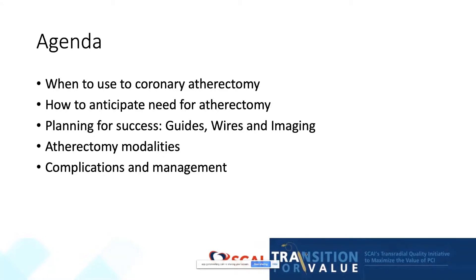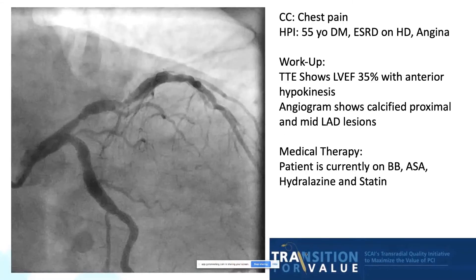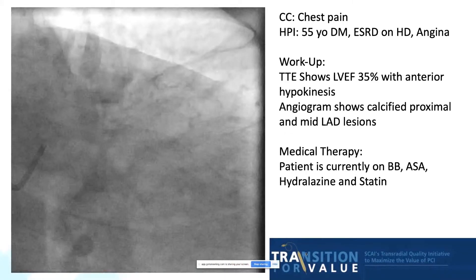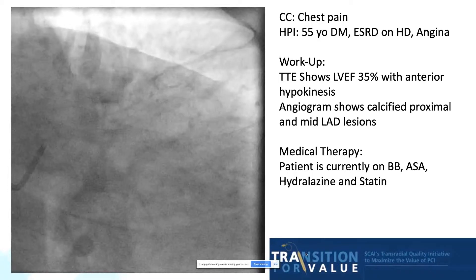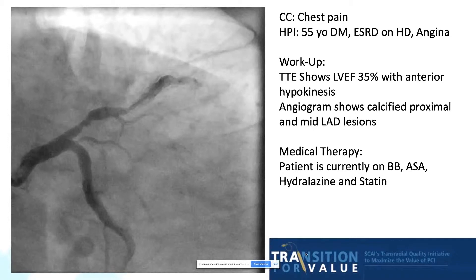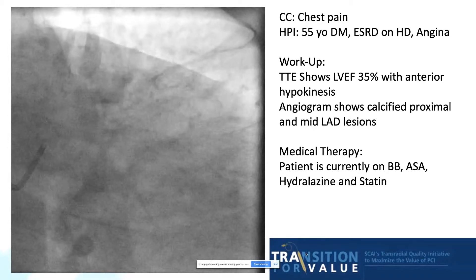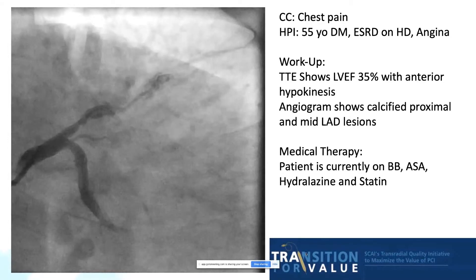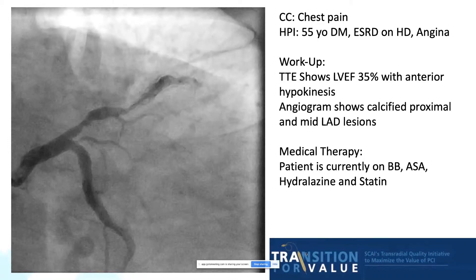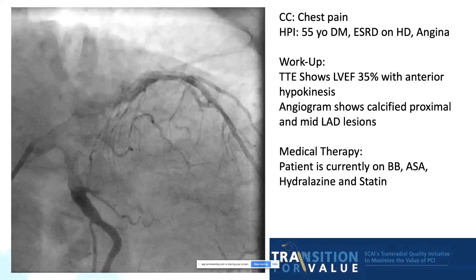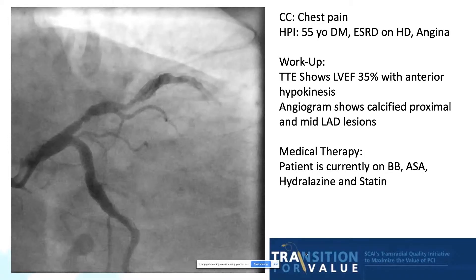I'd like to start with a case that I encountered a few years ago. This is a 55-year-old gentleman with diabetes, end-stage renal disease, and angina, who presents for evaluation and is found to have reduced LV systolic function. His angiogram shows a severely calcified proximal and mid-LAD lesion, and he's currently on reasonable medical therapy.